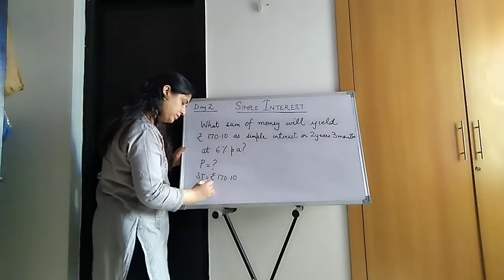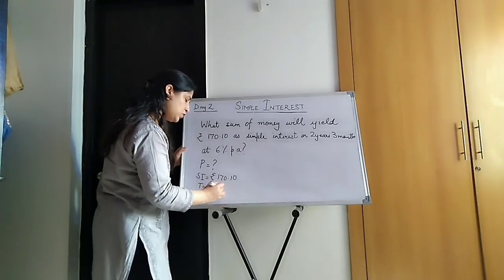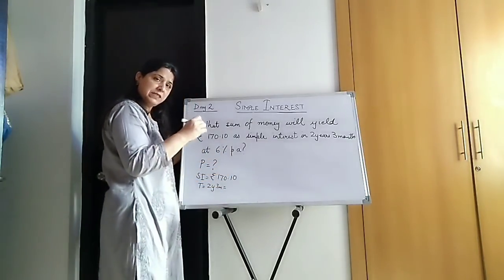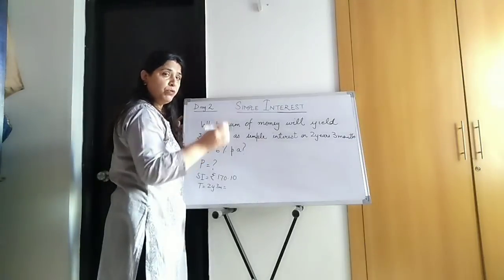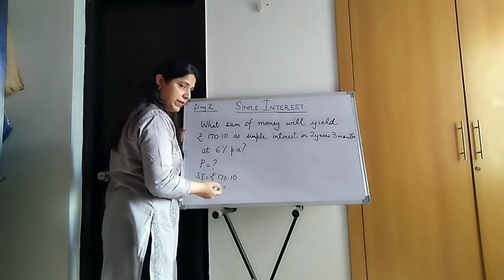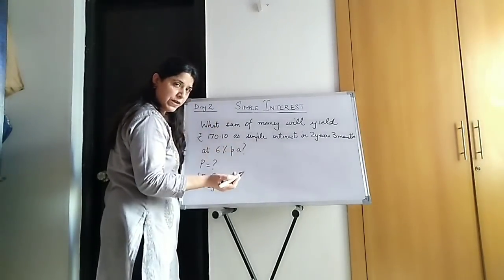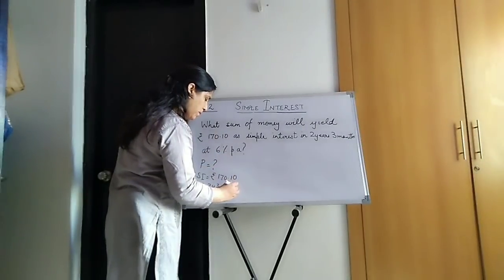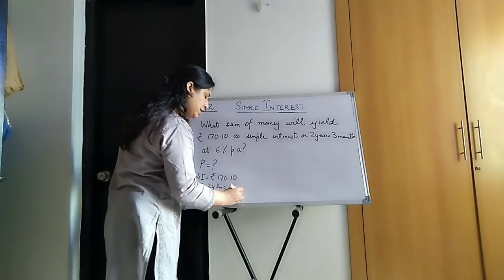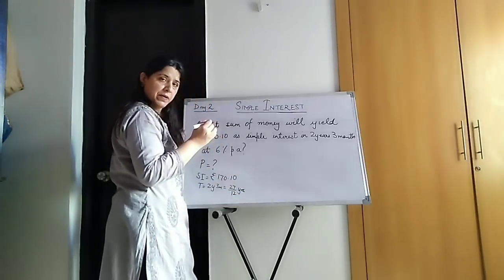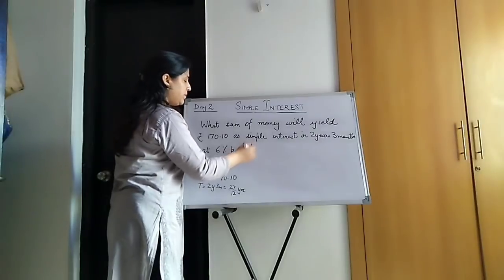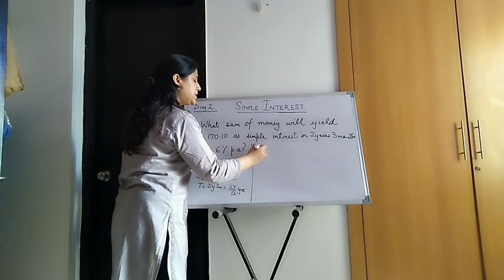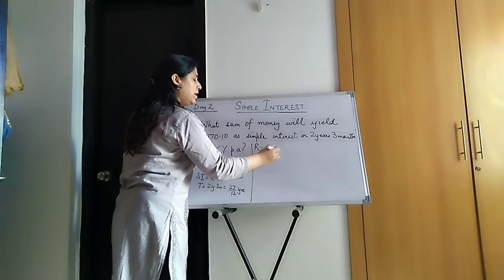Time is 2 years, 3 months. You all know how to convert. We have done it in the last lesson, converting time to years. 2 years has how many months? 1 year has 12, so 2 years has 24. 24 plus 3 is 27 upon 12 years. We have converted it to years. Then comes rate is 6%.